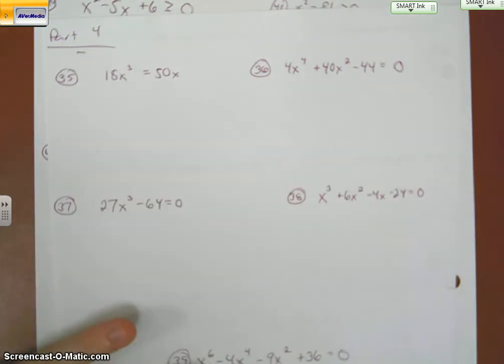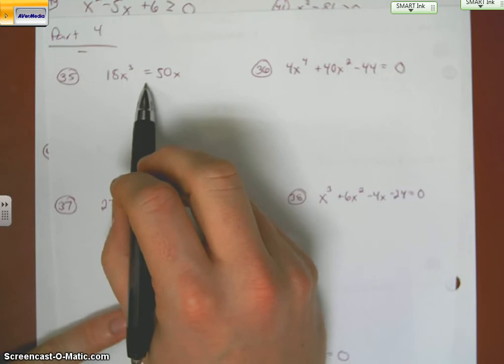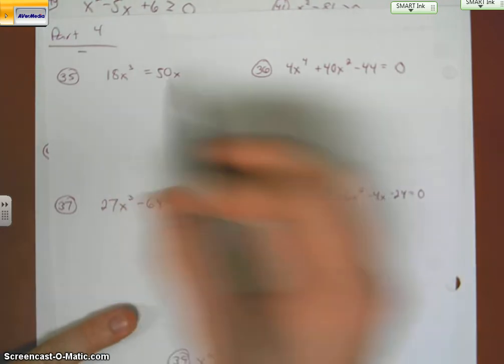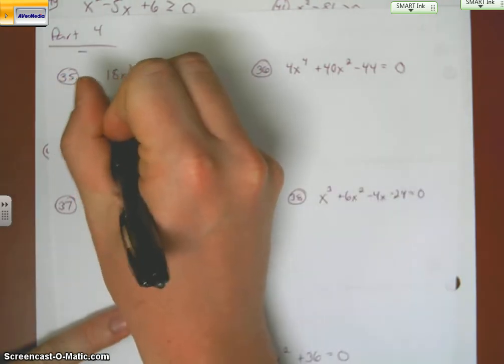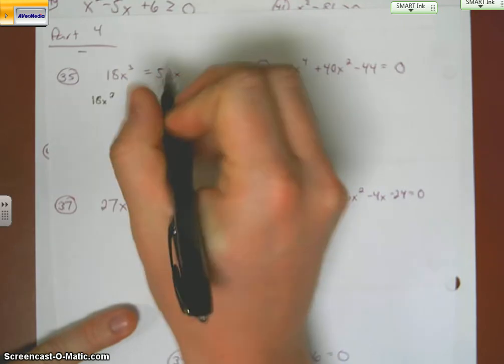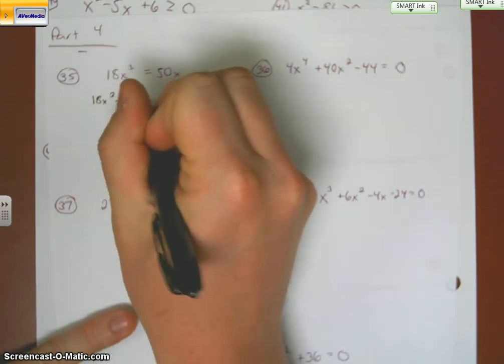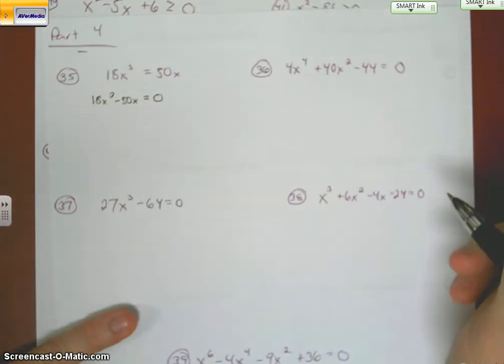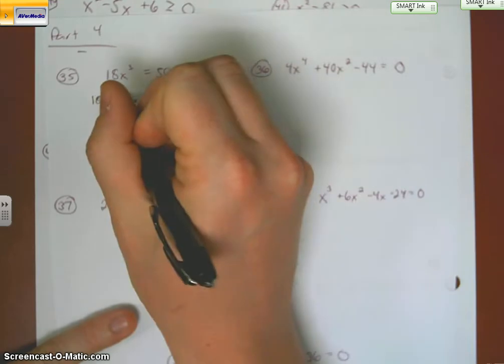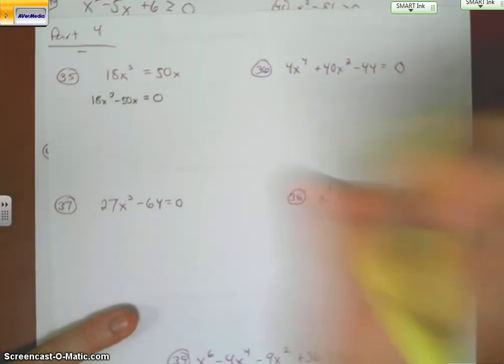So if we look at number 35, we notice that it's not set equal to zero. So we need to bring the 50x over. It's plus over here, so it's going to be minus over here.